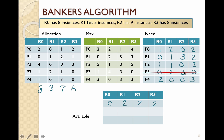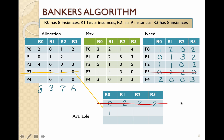P3 will be able to use the available resources, finish all of its work, and then the resources allocated to P3 will become available for the other processes. The allocated resources for P3 are added back into the available pool. We take P3's allocation (1, 2, 1, 0) and add it to the current available (0, 2, 2, 2), so the available now changes to (1, 4, 3, 2).